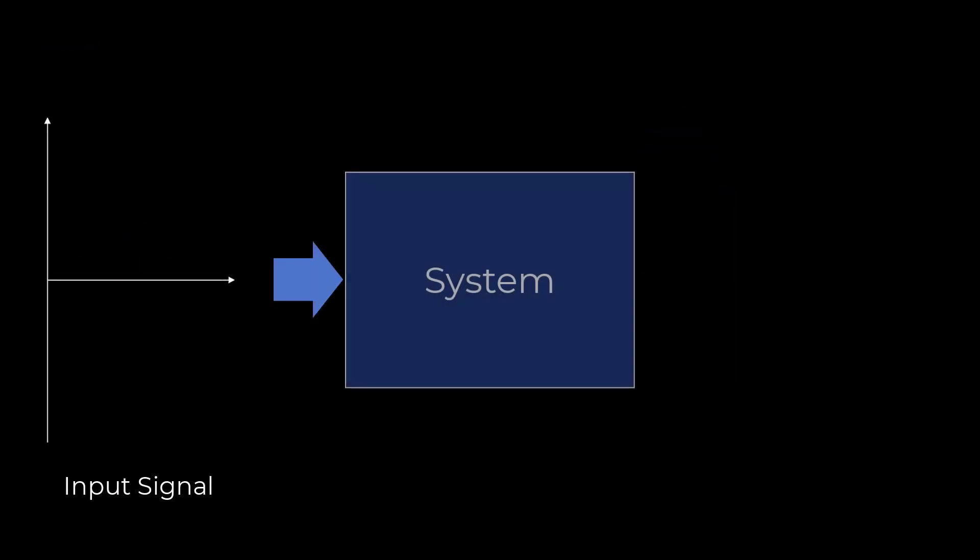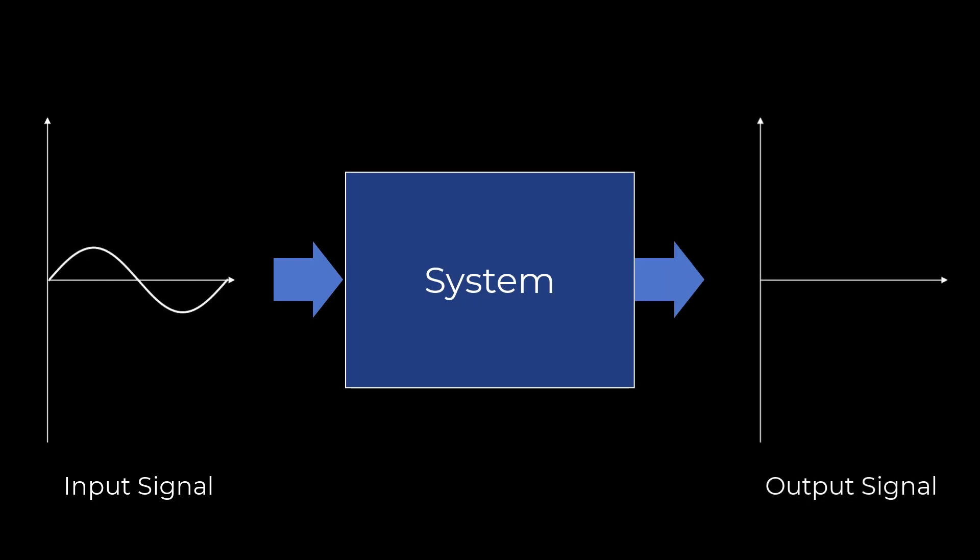This is really what the Bode diagram tells us. How a signal changes when passing through a system.